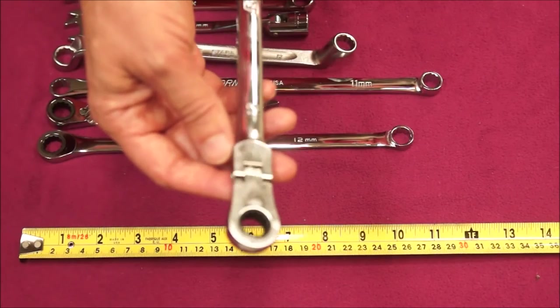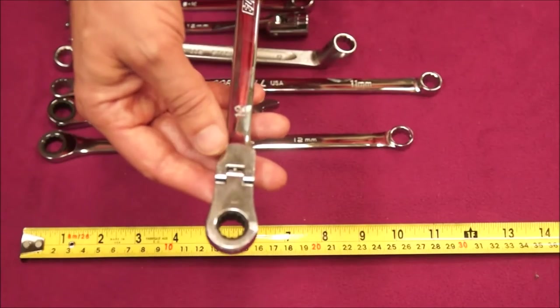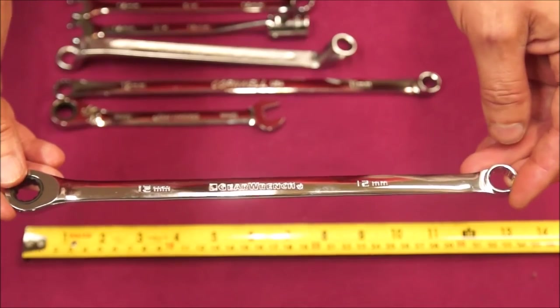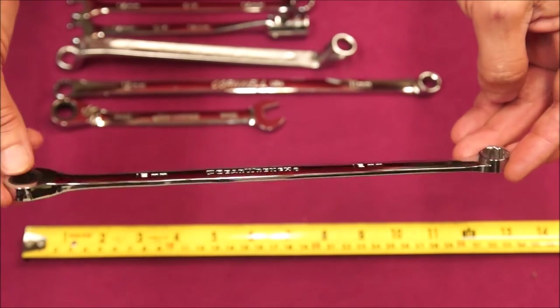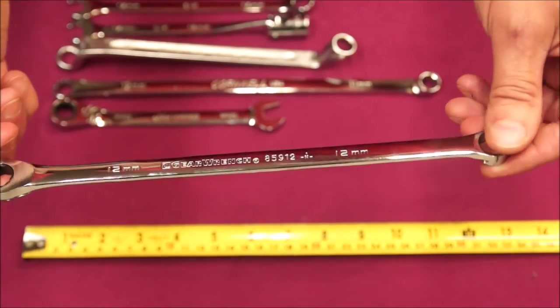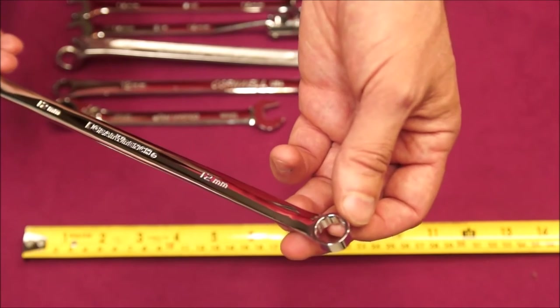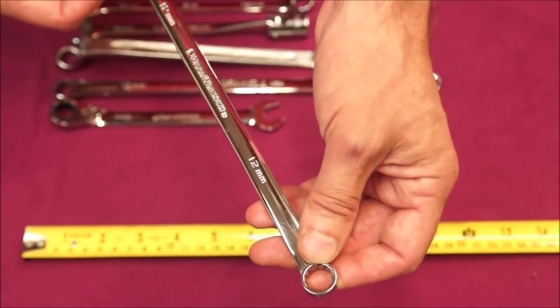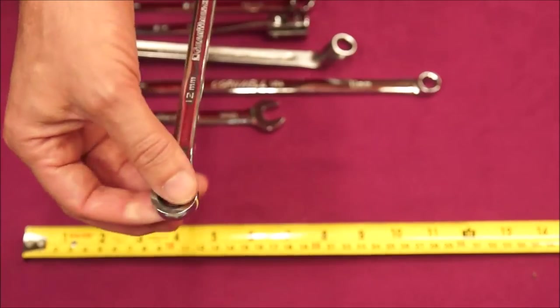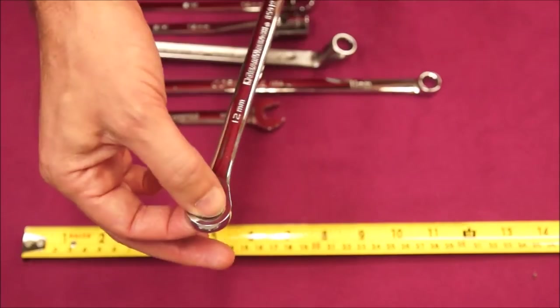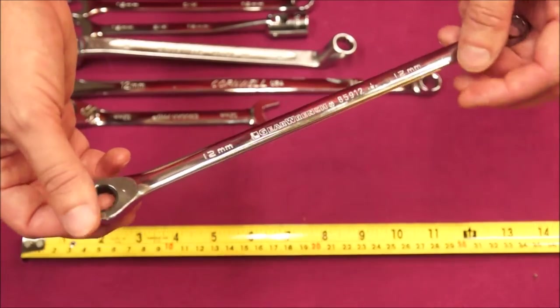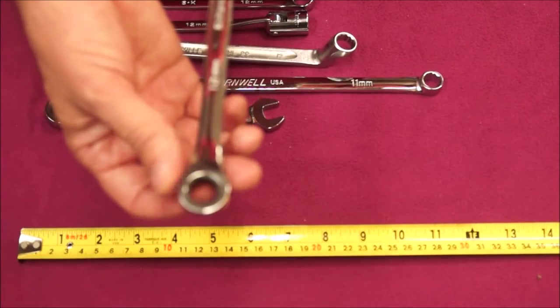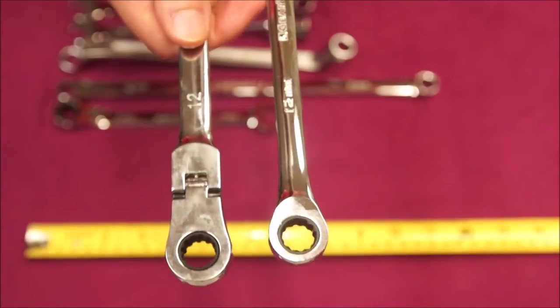Next ratcheter would be the Gear Wrench model. The thing I like about these is the solid closed end, box type or ring type depending on where you are in the world. You can bust it loose with this side, flip it over on your ratchet, and very quickly remove it or snug it up. This head is much narrower. I'll compare it to the Easy Red.